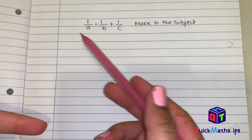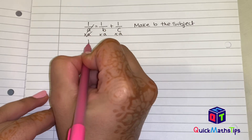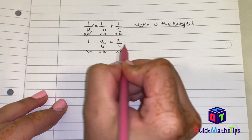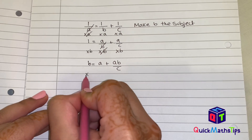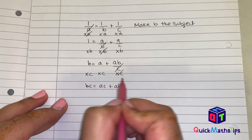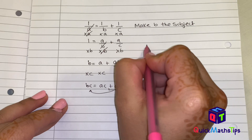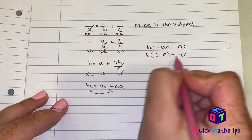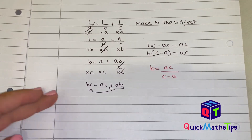First, I want to get rid of the fractions in each section. To get rid of a, multiply each section by a — this cancels out, leaving 1 equals a over b plus a over c. Then multiply each section by b — this cancels, leaving b equals a plus ab over c. Then multiply each section by c — this cancels, leaving bc equals ac plus ab. Now rearrange to make b the subject: subtract ab from both sides to get bc minus ab equals ac. Factorize by b: b bracket c minus a equals ac. Divide by c minus a: b equals ac divided by c minus a.